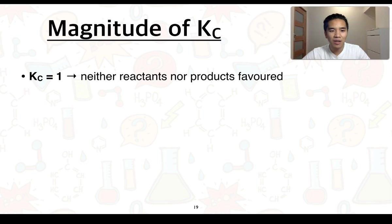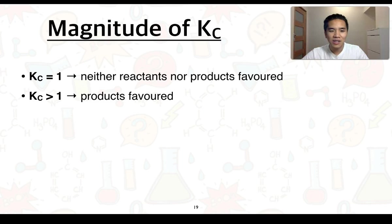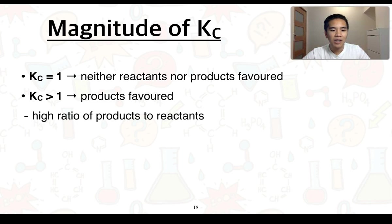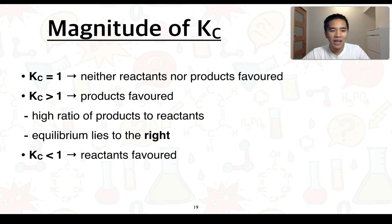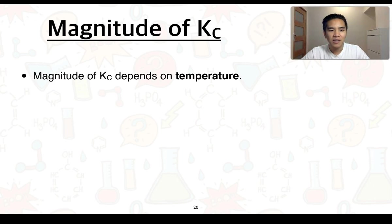In terms of the magnitude of Kc: if Kc equals one, neither reactants nor products are favored. If Kc is greater than one, the products are favored — the concentration of products in the numerator exceeds that of reactants, giving a high ratio of products to reactants, and equilibrium lies to the right. If Kc is less than one, reactants are favored, giving a low ratio of products to reactants, and equilibrium lies to the left.